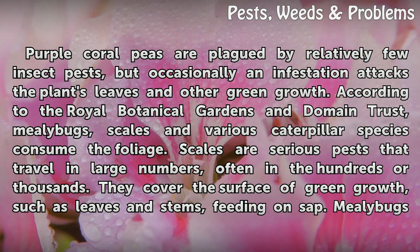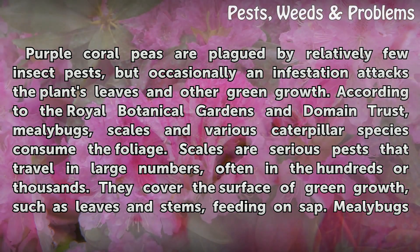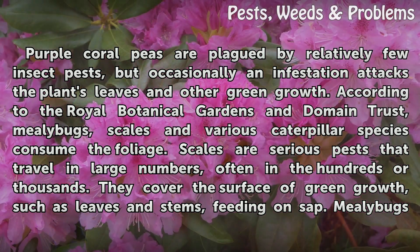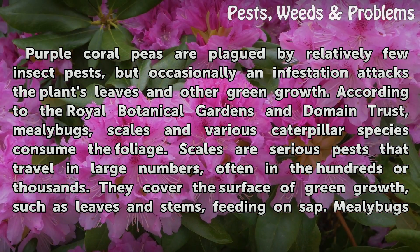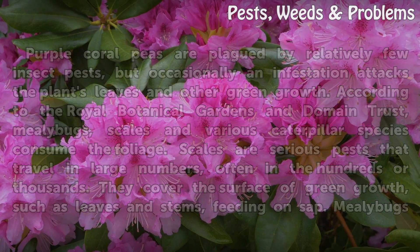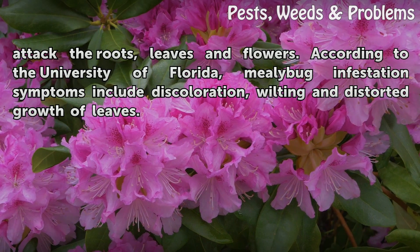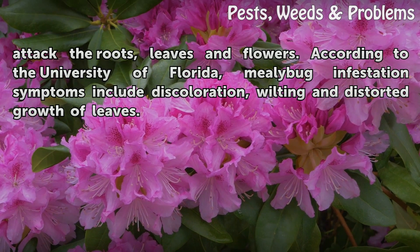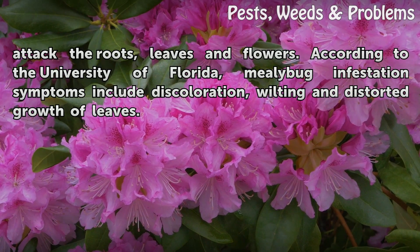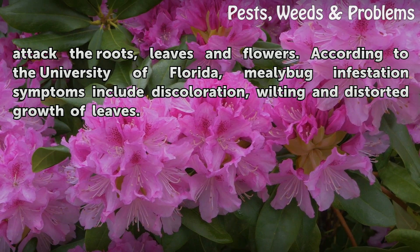Scales are serious pests that travel in large numbers, often in the hundreds or thousands. They cover the surface of green growth, such as leaves and stems, feeding on sap. Mealybugs attack the roots, leaves, and flowers. According to the University of Florida, mealybug infestation symptoms include discoloration, wilting, and distorted growth of leaves.